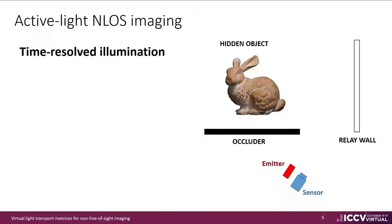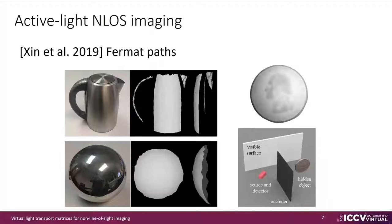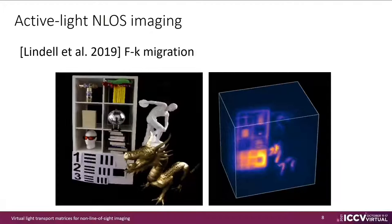In particular, active light and loss methods simultaneously illuminate a visible relay surface and measure the resulting indirect illumination from the hidden scene at pico-second resolution. Time-resolved indirect illumination reveals information about the hidden scene that is usually lost in a regular steady-state image. Thanks to these measurements, these methods can reconstruct scenes with challenging transport effects such as surfaces with complex reflectance properties, micron-scale geometry, or clutter scenarios with occlusions and interreflections.